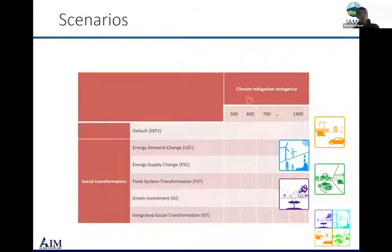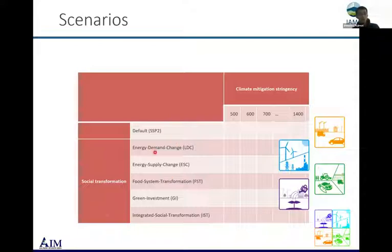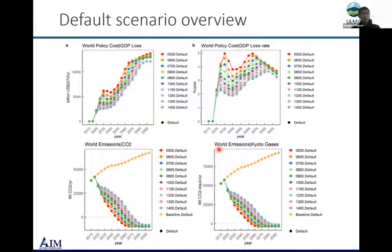On the climate policy side, we set a carbon budget from 500 to 1400 GtCO2 from 2011 to 2100, covering 1.5 to 2 degree stabilization scenarios — though slightly different from the AR6 definition. We set ten climate conditions combined with the social transformation measures. The default scenarios show a gradual shift from lower to higher GDP loss as mitigation ambition increases.